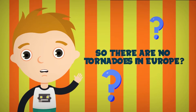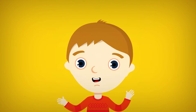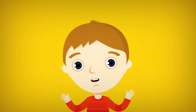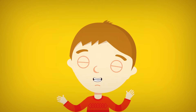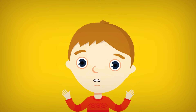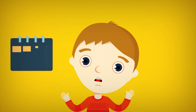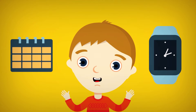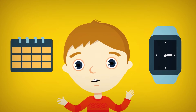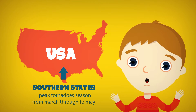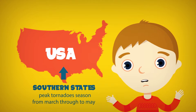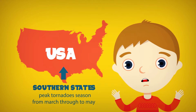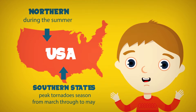So there are no tornadoes in Europe? Well, there are, but not as many as in America and they are usually not as powerful. Tornadoes can happen at any time of the year and at any time of the day. In the southern states, peak tornado season is from March through to May. Peak times in the northern states are during the summer.